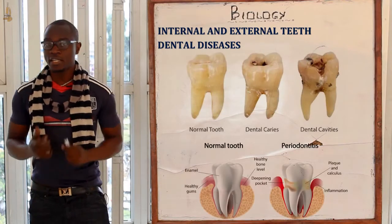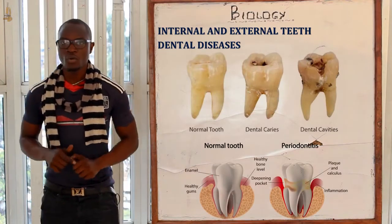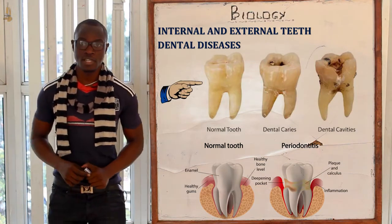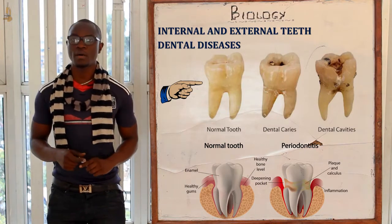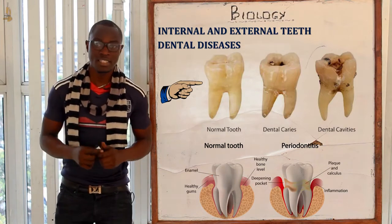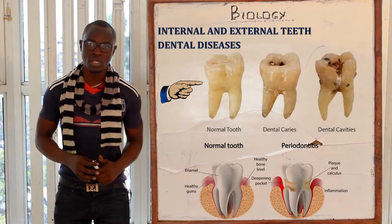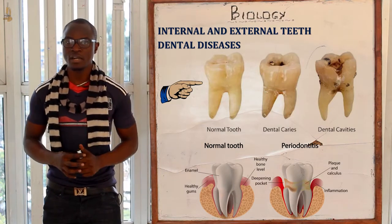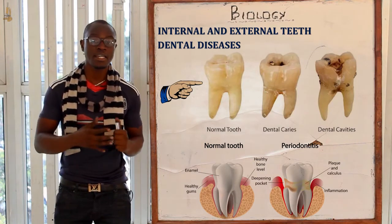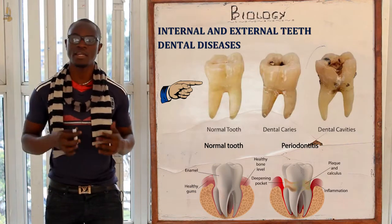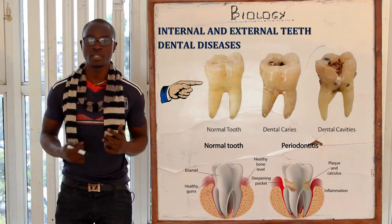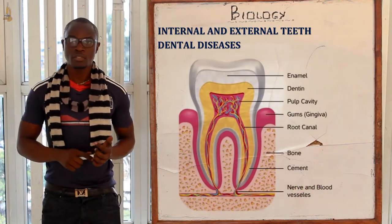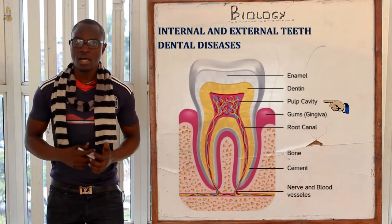Now let's look at dental diseases. First we have dental caries and then periodontal disease. Dental caries is brought about when bacteria or food substances left on the teeth corrode the crown or enamel. The bacteria feed on food on top of the teeth, multiply, and release acidic compounds. These acidic compounds are responsible for corroding the enamel, leading to dental caries or tooth decay.